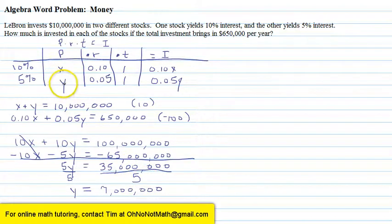Remember Y is the amount of money that LeBron put into the 5% interest stock. So we're talking money here. That's one of our answers.